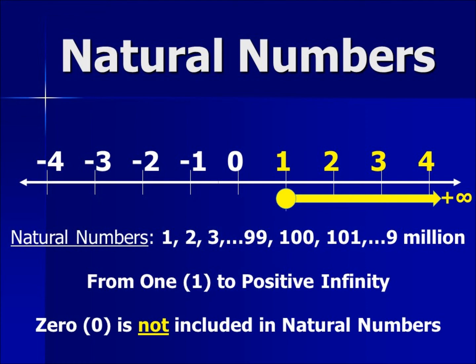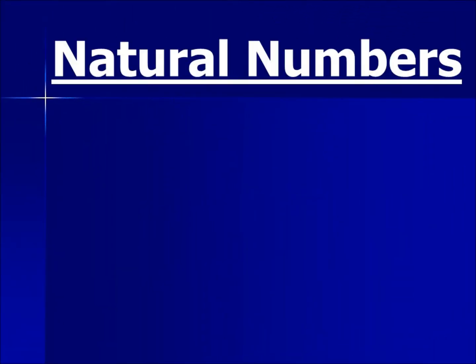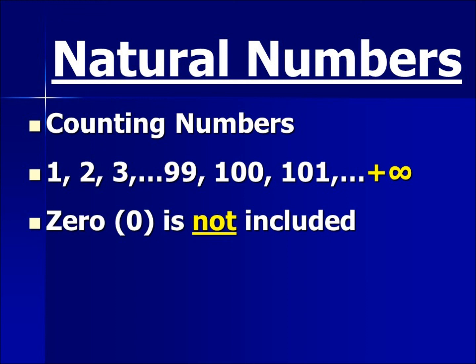That's it, so let's review. Natural numbers are also called counting numbers. Natural numbers begin at the number one and include all the positive complete numbers. Zero is not a natural number. That's the end of our video. Thank you.